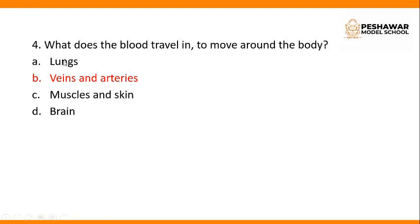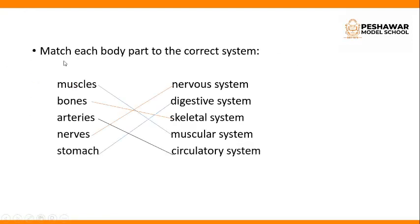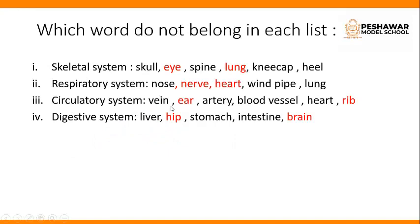Then match each part of the body to the correct system — question number 2 on book page number 8. Muscles go with the muscular system; bones with the skeletal system; arteries are involved in the circulatory system; nerves with the nervous system; and the stomach is involved in the digestive system.